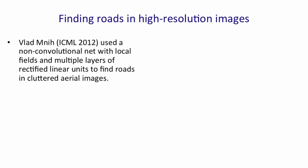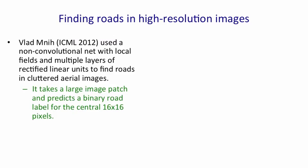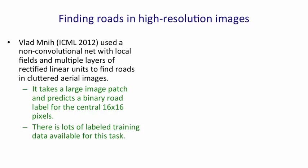There are other application domains where we've learned the same lesson. Vladimir Nhi used a net with local fields but without convolution to extract roads from aerial images of cluttered urban scenes. He uses multiple layers of rectified linear units and takes a relatively large image patch, predicting for the central 16 by 16 pixels whether each pixel is road or not. The nice thing about this task is that there's a lot of labeled training data available, because maps tell you where the center lines of roads are and roads are roughly fixed width.